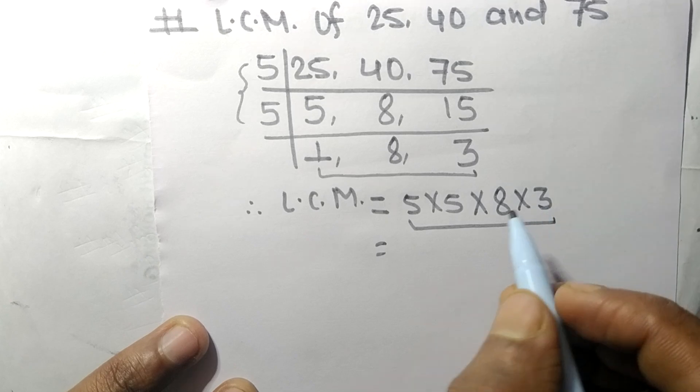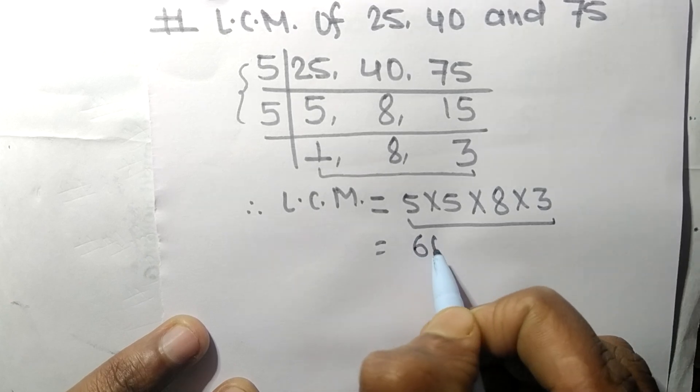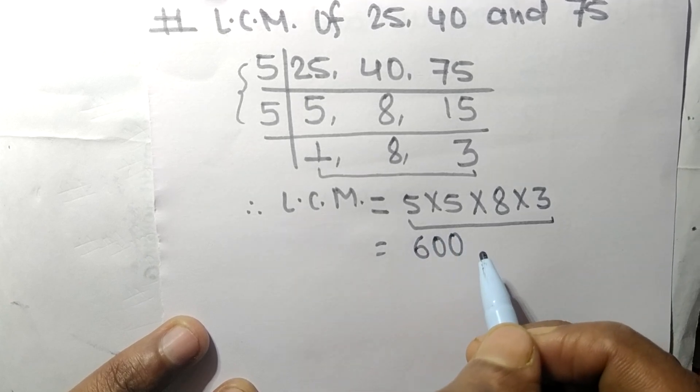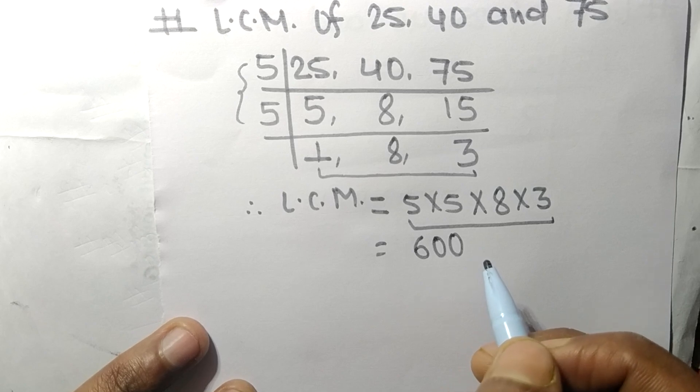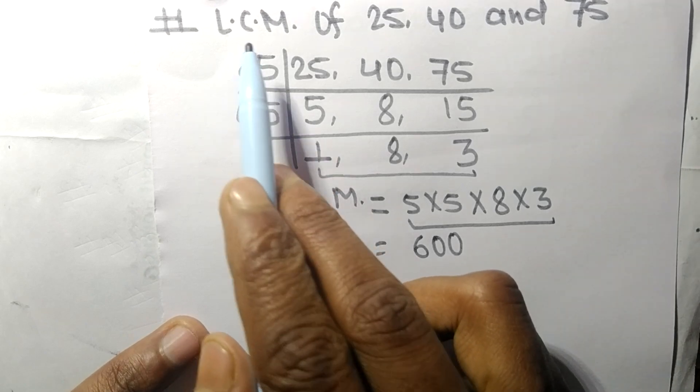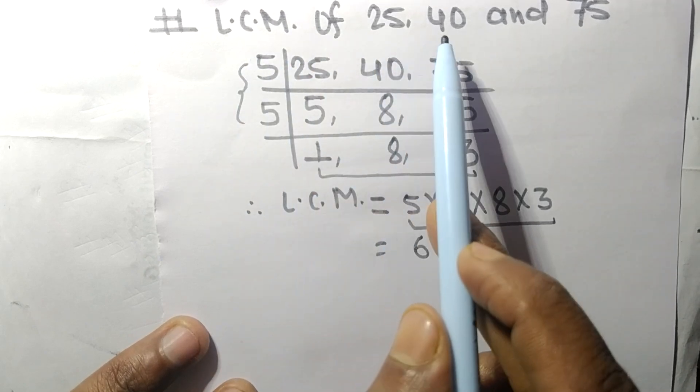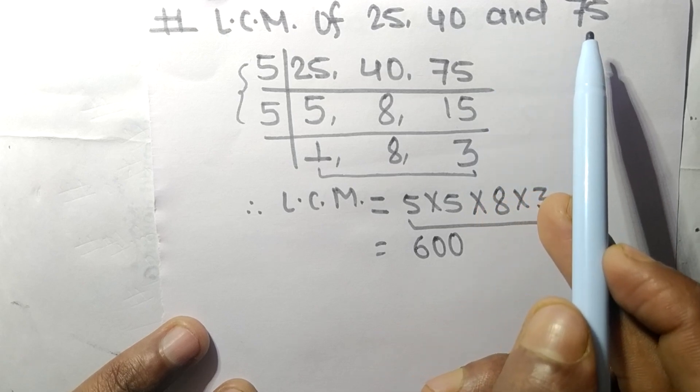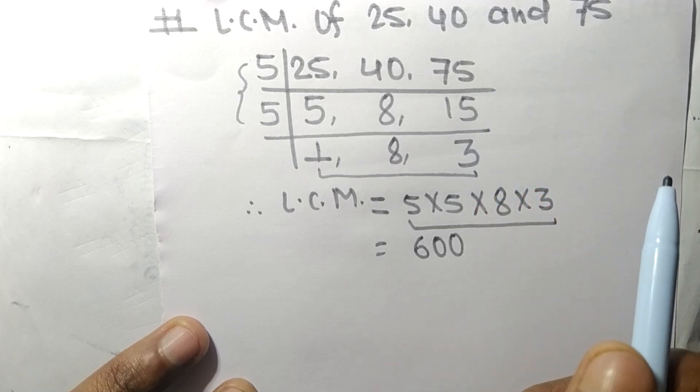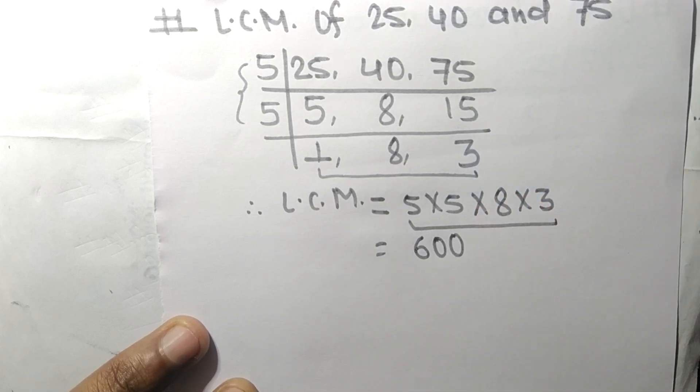So by multiplying all these numbers we get 600. So 600 is the LCM of 25, 40, and 75. So this much for today and thanks for watching.